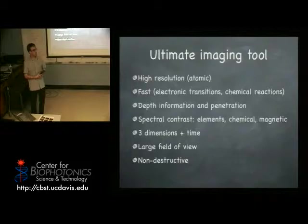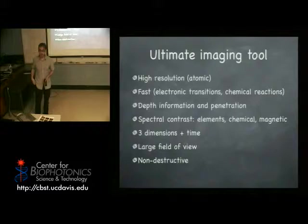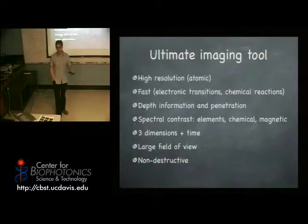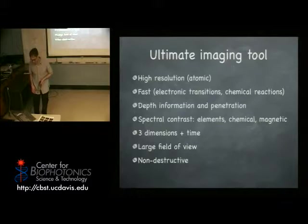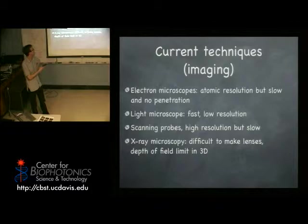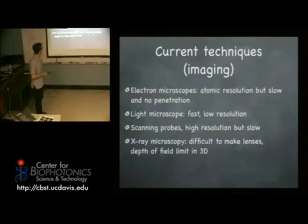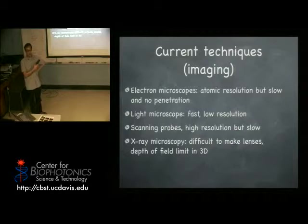If you try to achieve all these properties at the same time, it's almost impossible. In particular, non-destructive and high-resolution don't go well together. If you want very high resolution, you're going to damage your sample — energy is going to be deposited on the sample, breaking chemical bonds, and the sample will fall apart. Current techniques like electron microscopy can give you very high resolution — even atomic resolution. You can make very good lenses for electron microscopes, but they have several disadvantages. One is that it's slow, and two is that there is not much penetration, so you can't look at thick objects.